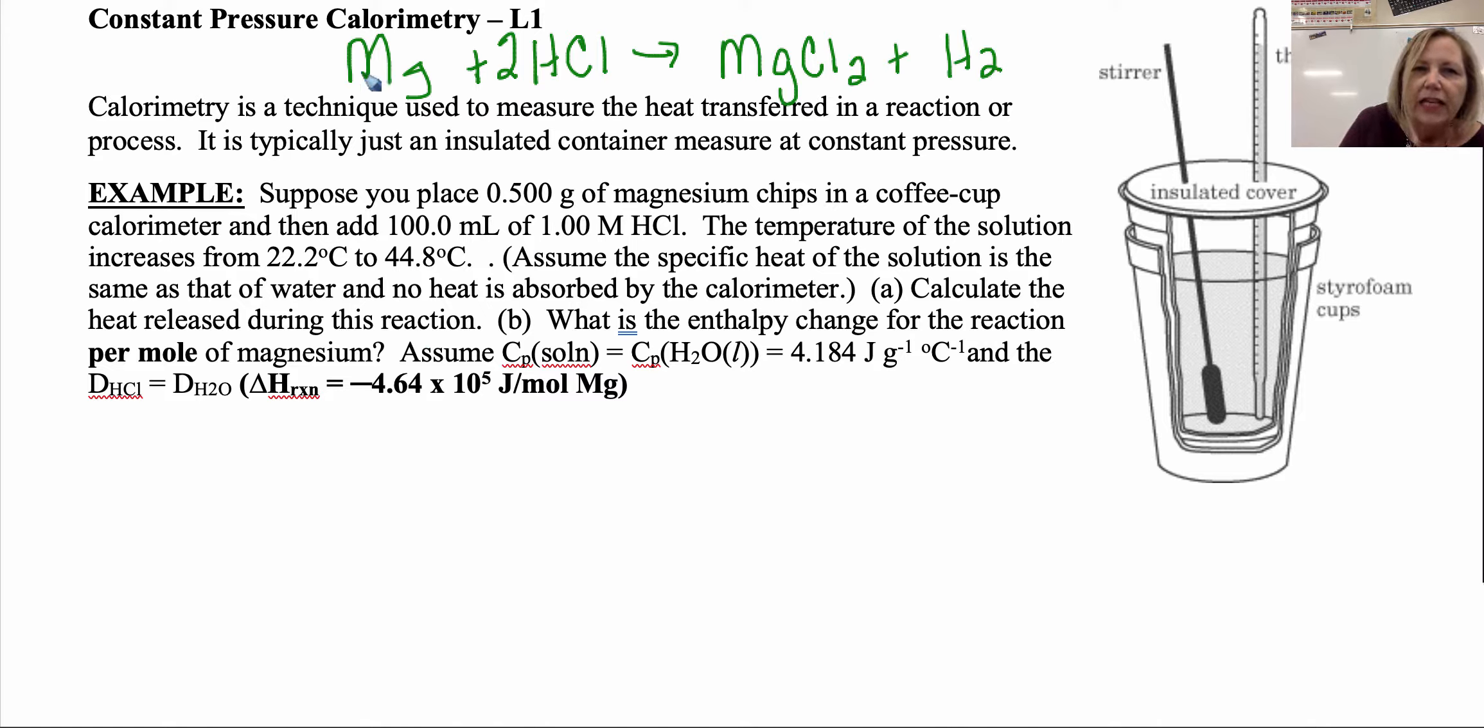All right, now the heat of this reaction, so delta H of the reaction, since it's constant pressure, we're going to equate that to the heat of the reaction. Q of my reaction is equal in magnitude but opposite sign to Q of the solution, not just of water, but it includes the HCl solution and the magnesium that ultimately becomes part of that solution.